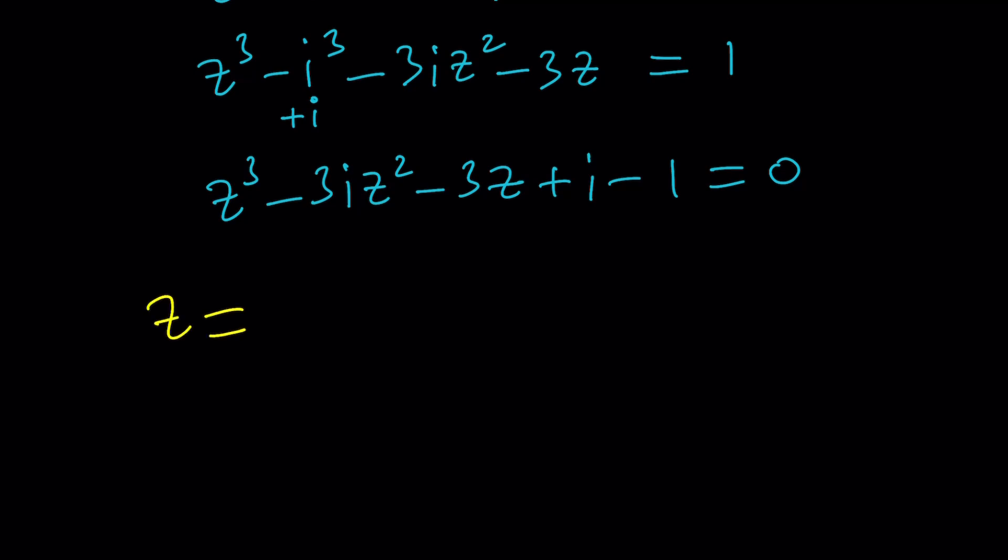And that is usually given by Z equals some other variable. Let's just say W plus the coefficient of Z squared negated and divided by 3. So that's going to be I. If you replace Z with W plus I, this equation is supposed to simplify. Let's go and replace W plus I with Z or the other way around. And let's see what happens.